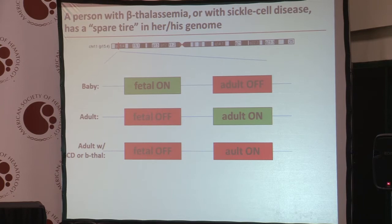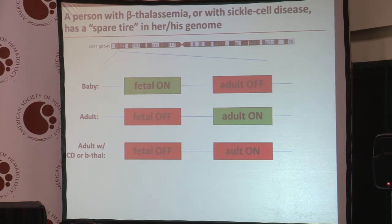So the deep irony for a person with sickle cell disease or beta-thalassemia is the adult gene which is on is mutant or defective and it causes disease. And in the genome, there is, if you will, a spare tire — a perfectly functional gene for a globin — which in principle could be curative, but unfortunately the person cannot open the trunk and retrieve that spare tire to replace the flat.